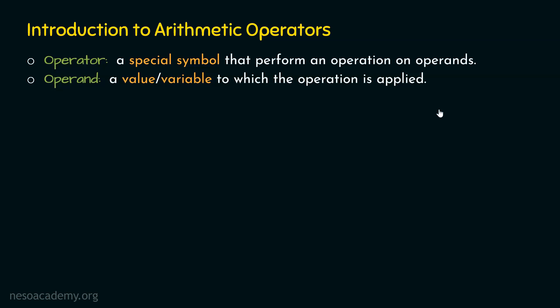For example, let us assume we have three plus four. Three and four are the operands, and plus is the operator applied on these operands. The plus operator is the addition operator, which is used to perform the addition. Now that we know the difference between operator and operand, let's see the list of arithmetic operators in Python.